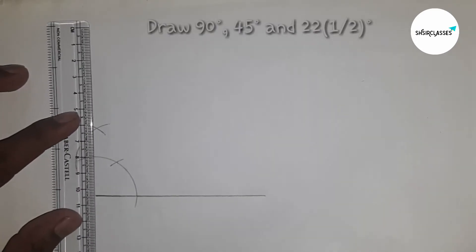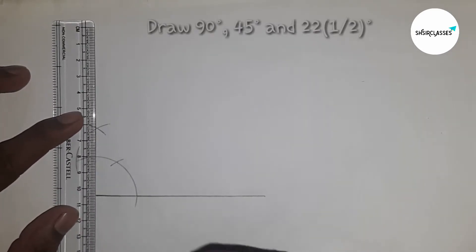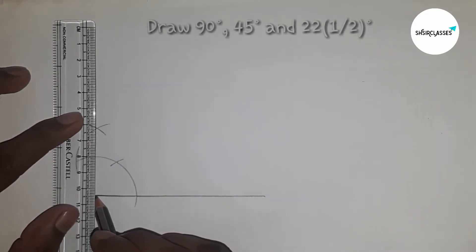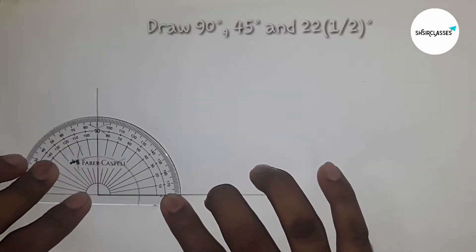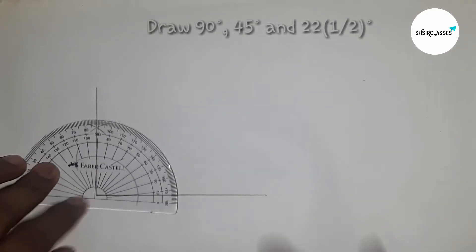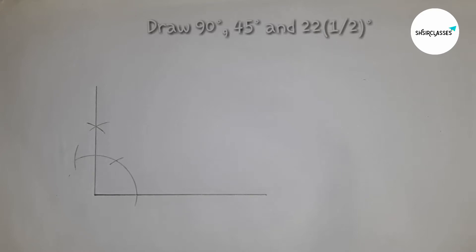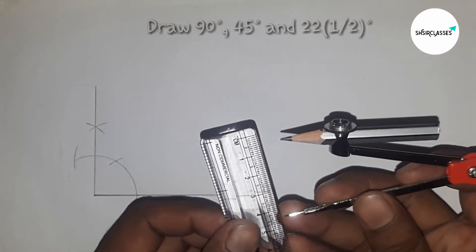Now I'm going to join these two points to get a 90 degree angle. So this is a 90 degree angle. Now I'm going to check whether it is 90 degrees or not using the protractor.